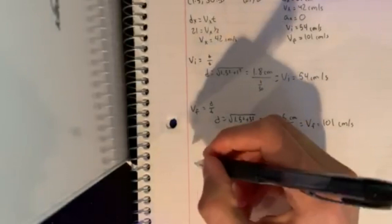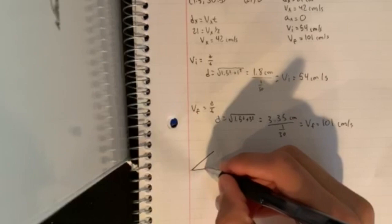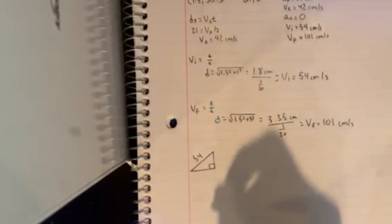For v-initial y, I'm going to draw the triangle using v-initial as the hypotenuse, which is 54. And then we know that the x component is 42 because it's constant.